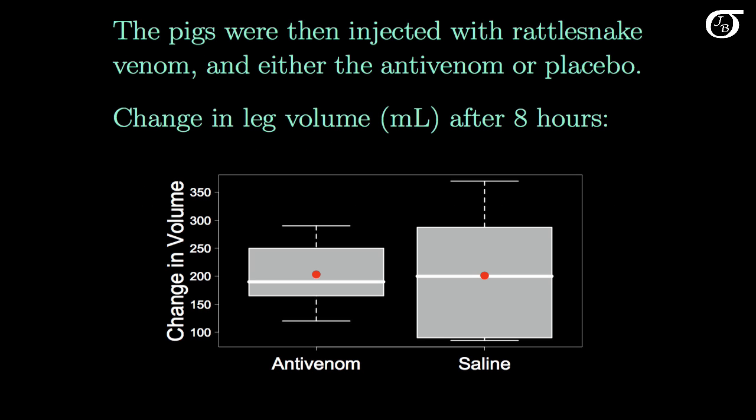The pigs were then injected in the leg with rattlesnake venom and either the antivenom or placebo. And as a measure of swelling we're going to use the change in volume of the leg after 8 hours. A large change in volume corresponds to a lot of swelling.